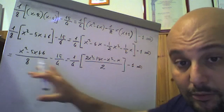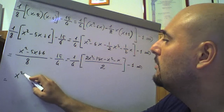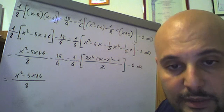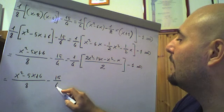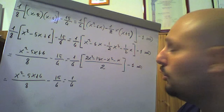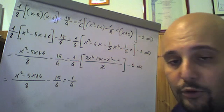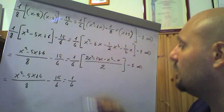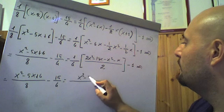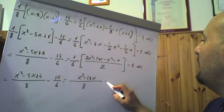Scriviamo ancora (x²-5x+6)/8 meno 15 quarti uguale. 2x² meno x² è x², meno 12x meno x è -13x. Quindi moltiplichiamo un quarto per (x²-13x)/2: numeratore per numeratore, denominatore per denominatore, fa (x²-13x)/8, meno 1.